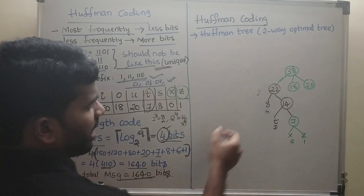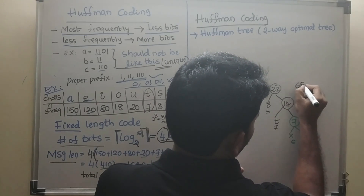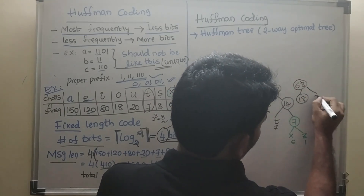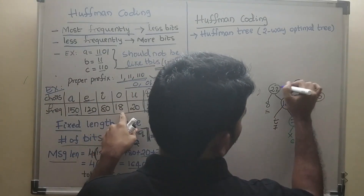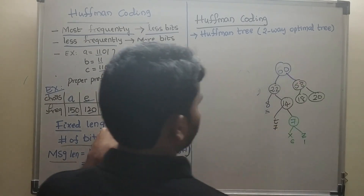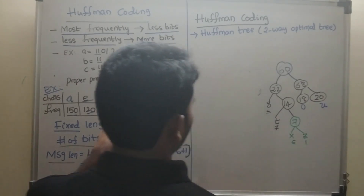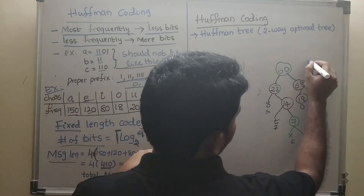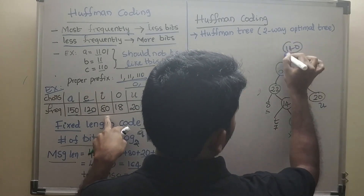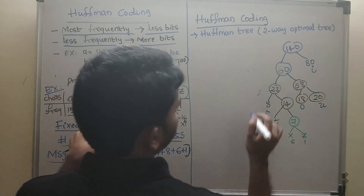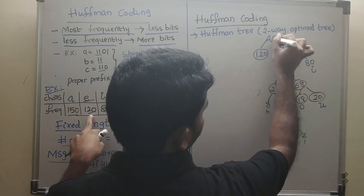Always the less value will be on one side. So next we check: is there any value less than 38? No, so 22 + 38 = 60. Then I (80) combines: 60 + 80 = 140. Then E (120): 120 + 140 = 260.